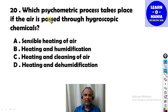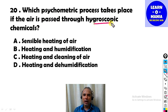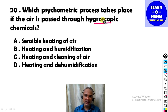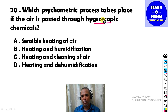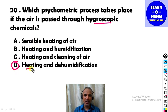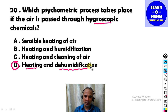Our next MCQ: Which psychrometric process takes place if air is passed through a hygroscopic chemical? Hygroscopic means a chemical that can absorb moisture from the air. If air is passed over a hygroscopic chemical, the air gets dehumidified. The answer is heating and dehumidification — the hygroscopic material absorbs the moisture from the air.